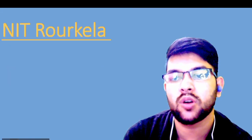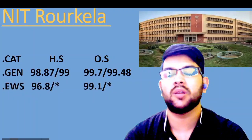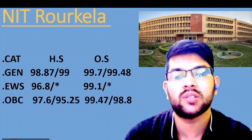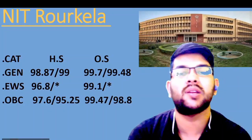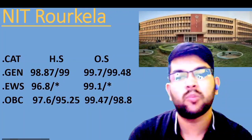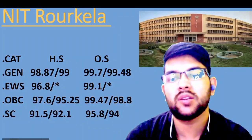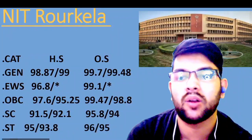For ST at NIT Calicut: 81.9 and 96 percentile. Next is NIT Rourkela. Here is the information. For general: 98.87 and 99.7. For EWS: 96.8 and 99.1. For OBC: 97.6 and 99.47. This is updated data reflecting the decrease in unique student count this year. For SC: 91.5 and 95.8, and for ST: 95 and 96 percentile.